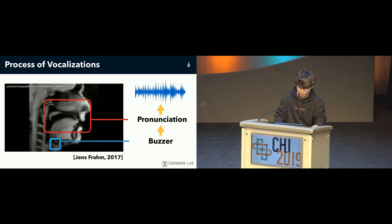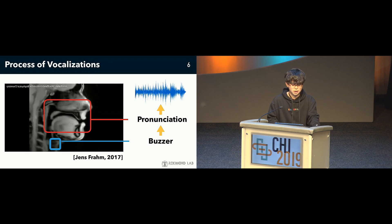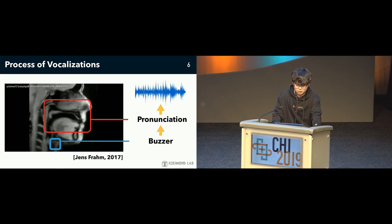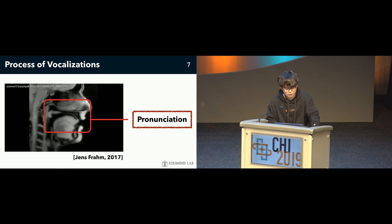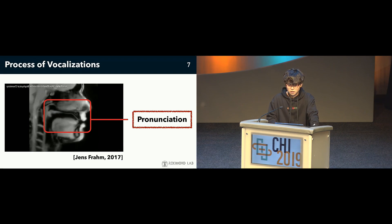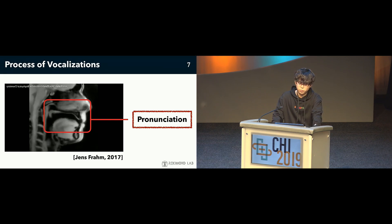I will explain our basic idea for silent speech. The vocalization process is broadly divided into two steps. The vocal cords create a buzzer sound and tone; pronunciation is created by the shape and movements of the oral cavities. Finally, the sound is discharged outside. Therefore, our pronunciation should be estimated from the shape and movements of our oral cavity. This video was captured by MRI, but MRI is not viable for wearable usage, so we used ultrasound.